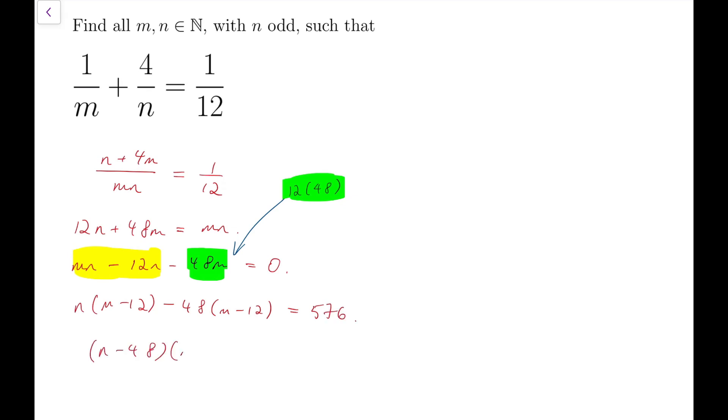So then, I've managed to factorize the left-hand side with two integers multiplying to become 576. Now, notice that I can split the two expressions into two integers with product equal to 576.